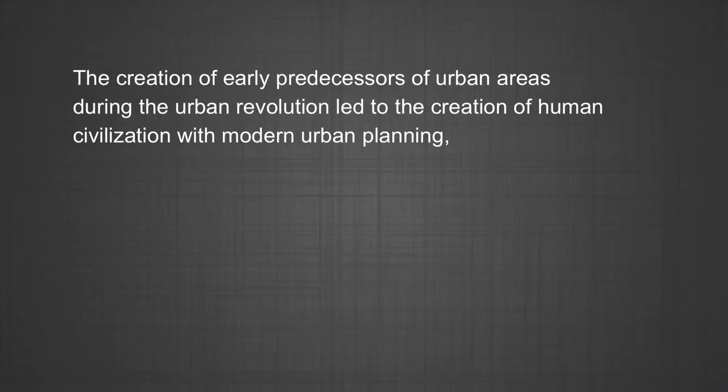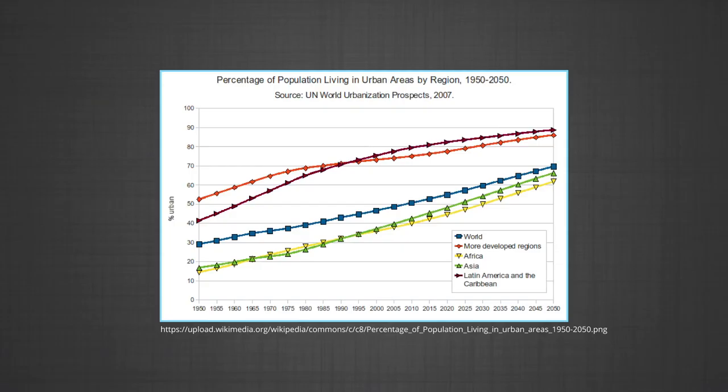The creation of early predecessors of urban areas during the urban revolution led to the creation of human civilization, with modern urban planning which, along with other human activities such as exploitation of natural resources, leads to alteration of the natural environment through human impact. The world's urban population in 1950 was just 746 million. It has increased to 3.9 billion in the decades since. In 2009, the number of people living in urban areas — 3.42 billion — surpassed the number living in rural areas, which was 3.41 billion, and since then the world has become more urban than rural.